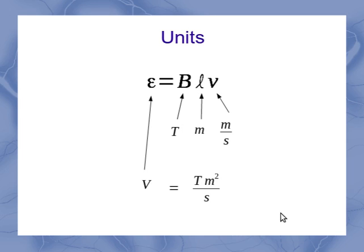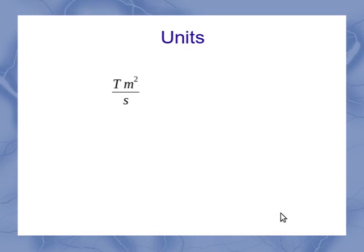Now, we went over this last lecture, but just take a quick look at it again. If I start with that Tesla meter squared per second, and I expand out what the Tesla is equal to from our earlier lectures, I see that I've got a Newton second per coulomb meter times a meter squared per second.